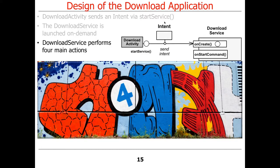There are basically four main things that happen in situations like this when you write these kinds of services. What I'm going to talk about is what you would do if you wrote all this stuff by hand. You'll see later that there's a cool framework called the intent service that automates a lot of these steps — that's what you'll actually be using if you're doing the undergrad version of assignment four. But it's important to know what's going on under the hood.